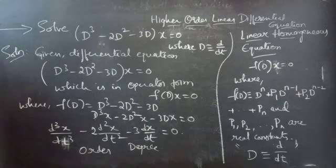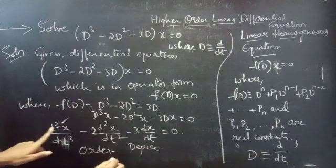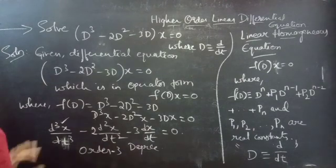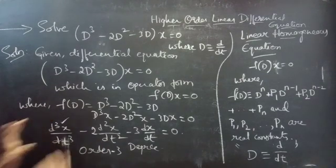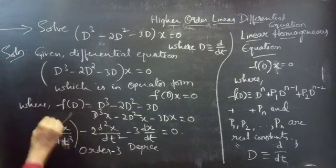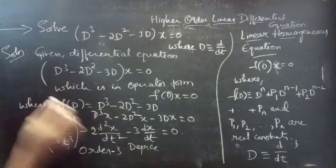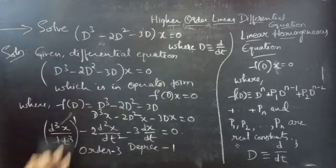Now we find the order and degree of the given equation. The highest derivative is d³x/dt³, so the order is 3. The power of the highest derivative is 1, so the degree of the given equation is 1.